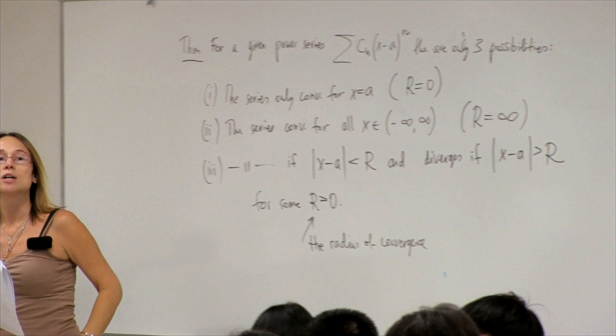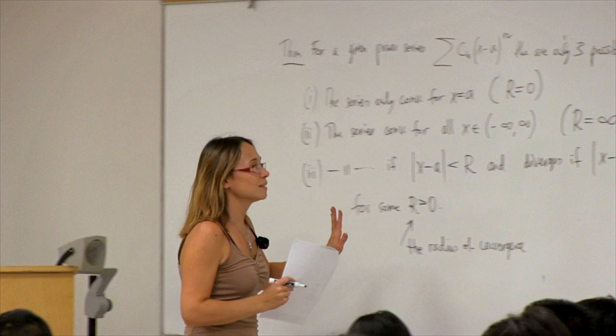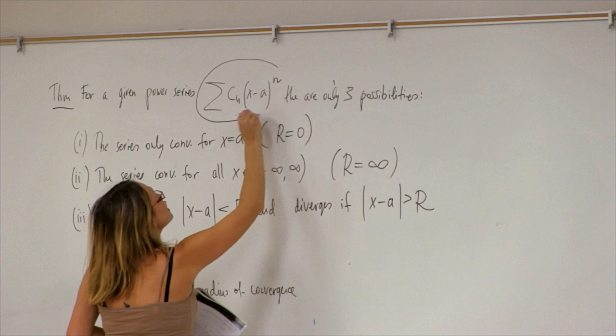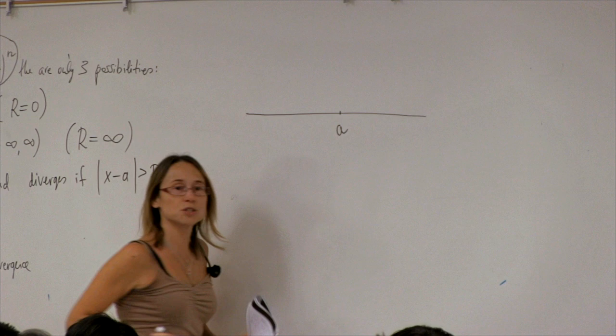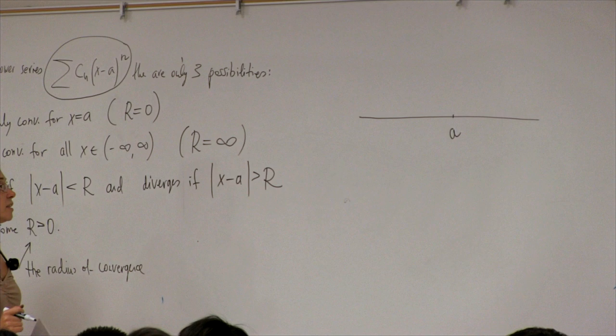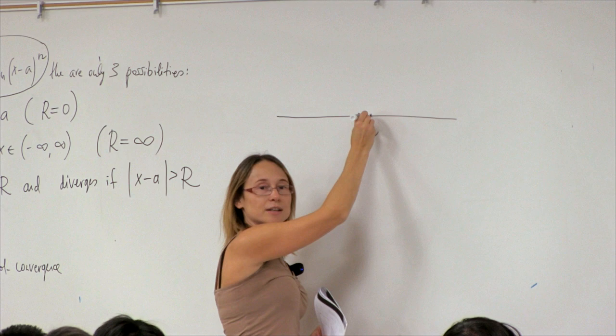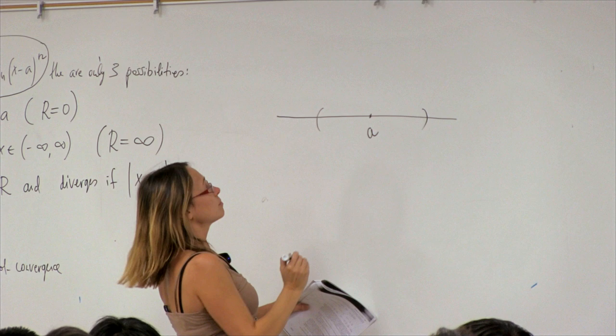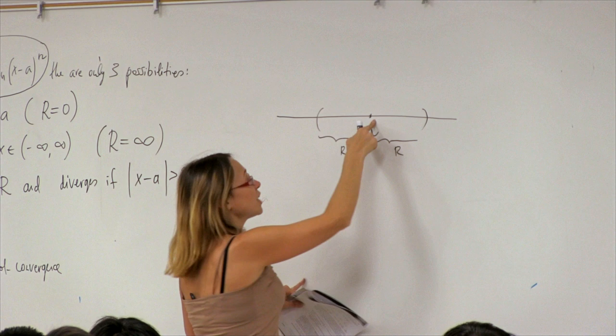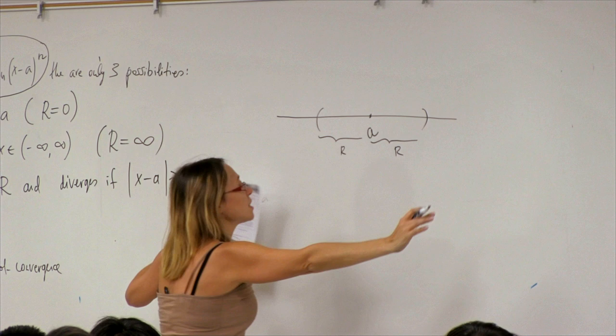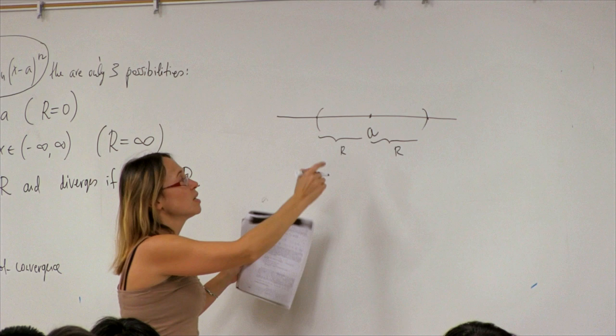A student asks for clarification on the radius of convergence. When given a power series centered at a, the theorem says there are only three cases: the series converges only when x equals the center; or everywhere; or you can draw an interval of radius r around the center — inside it converges, outside it diverges. The radius of convergence is the size of this interval.